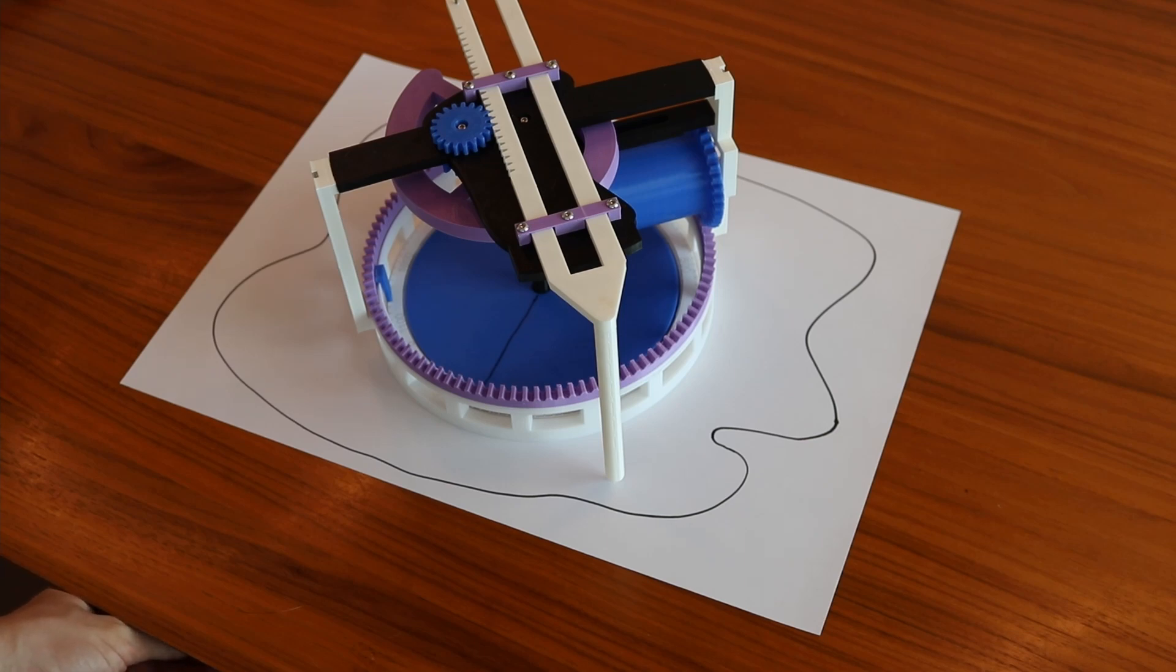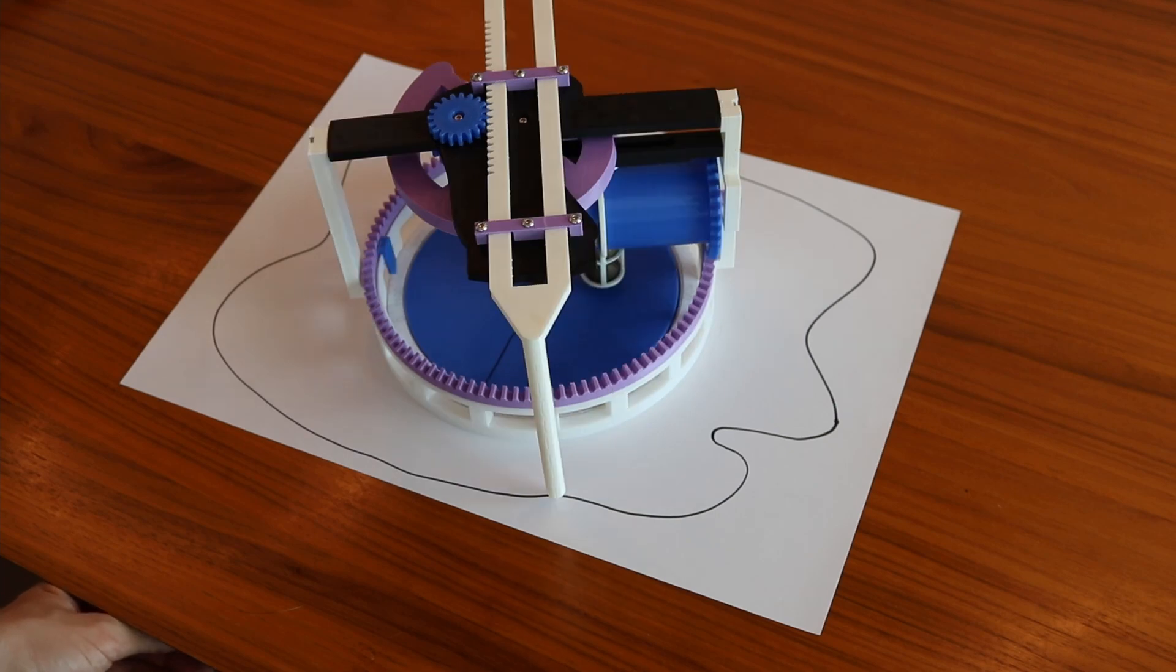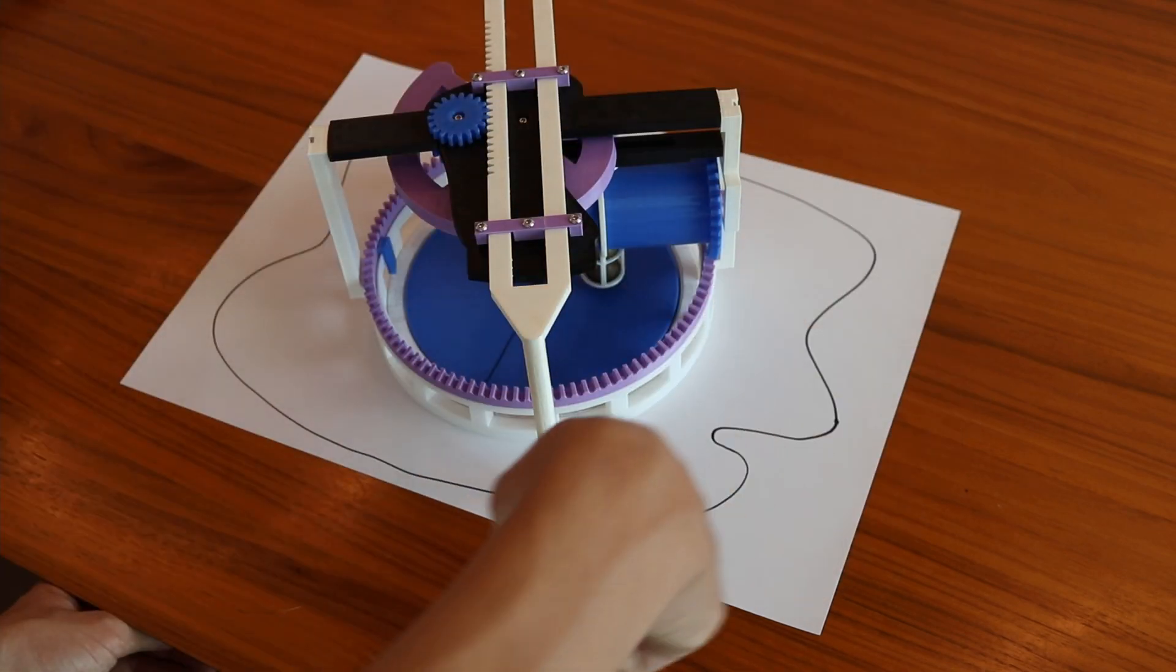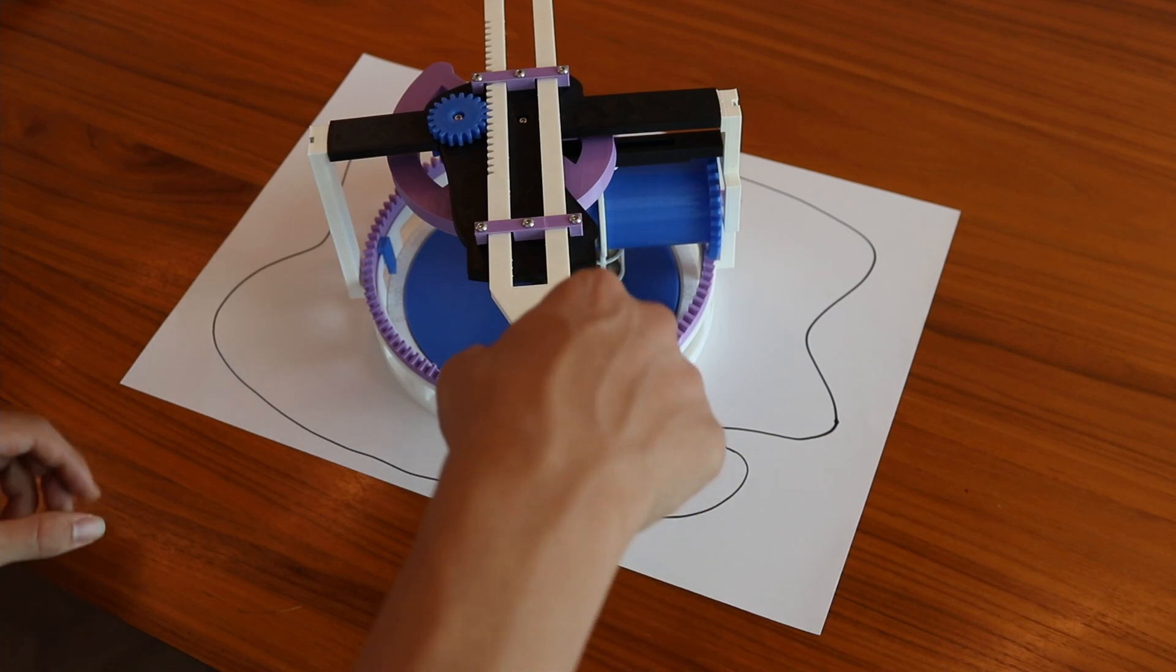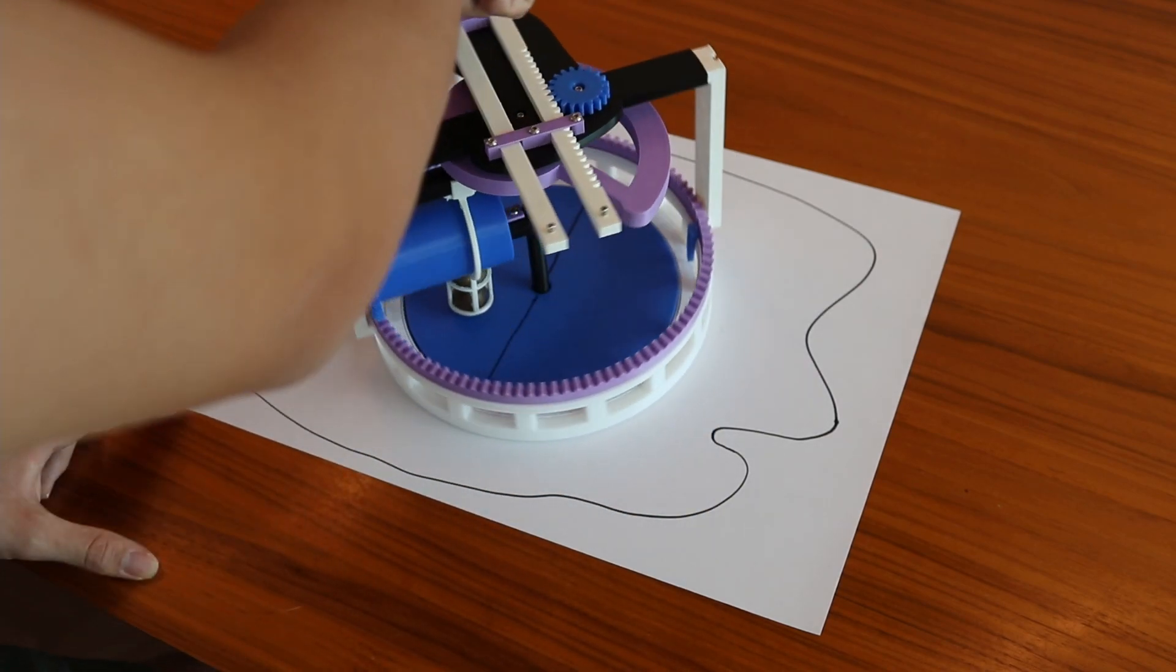Welcome to this video, where I show you the radial planimeter that I built with a friend. It's called a radial planimeter because a planimeter is a device that finds the area of some shape, in this case this squiggly line I drew on this piece of paper. And it's radial because it rotates around an axis.